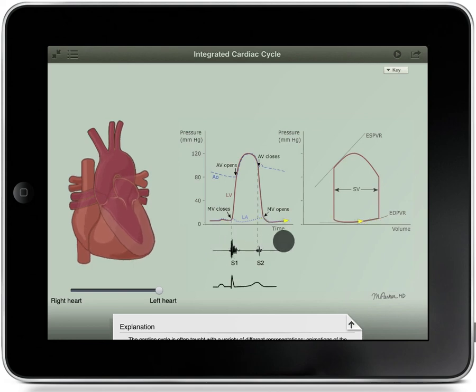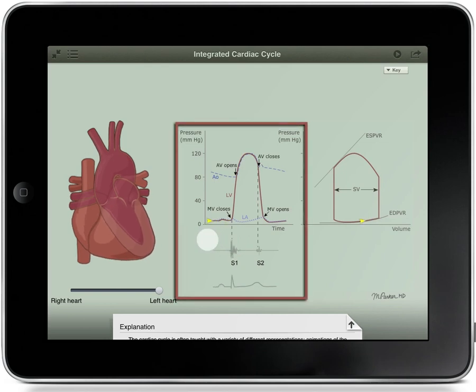Here are some key things to observe as you play with the diagram. The center stack of three graphs, one above another, is called a Wigger's diagram. It has a common time axis, so if you draw a vertical line, it cuts through all three graphs at what corresponds to the same time in the cardiac cycle.